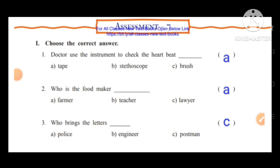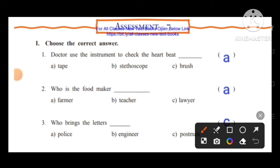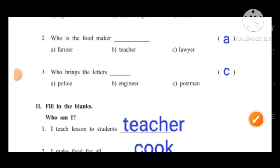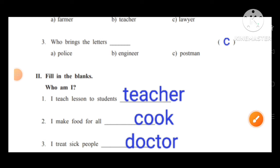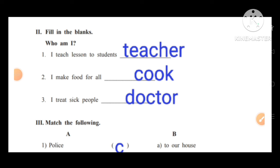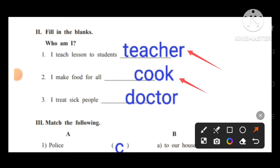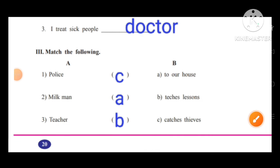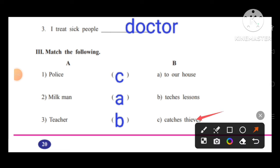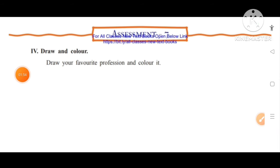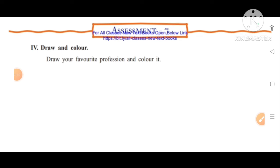Assessment 7: Choose the correct answer. First: a doctor uses this instrument to check heartbeat — option B, stethoscope. Second: who is the food maker — option A, farmer. Third: who brings the letters — option C, postman. Fill in the blanks: I teach lessons to students — I am a teacher. I make food for all — I am a cook. I treat sick people — I am a doctor. Match the following: police catches thieves; milkman brings milk to our house; teacher teaches lessons. Draw and color your favorite profession — student activity.